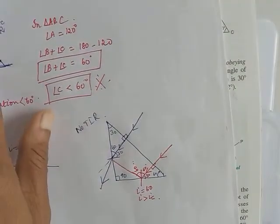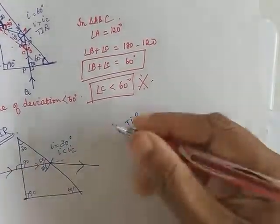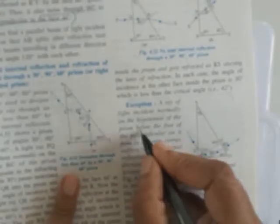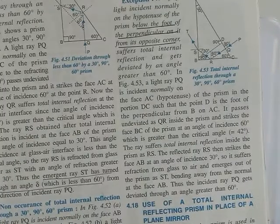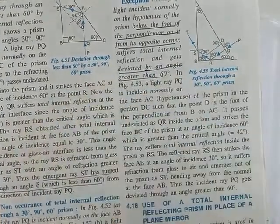So these are the two cases where total internal reflection does not take place. The exception is when a ray is incident normally on the hypotenuse below the foot of the perpendicular from the opposite corner — very close to the base — and in that case the ray is deviated by an angle greater than 60°.